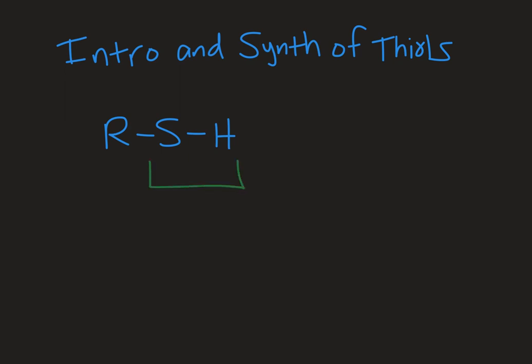A thiol is when we have an SH group on a carbon chain. It's analogous to an alcohol, but instead of OH it's SH.